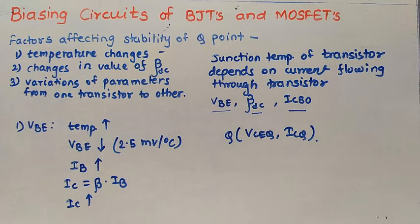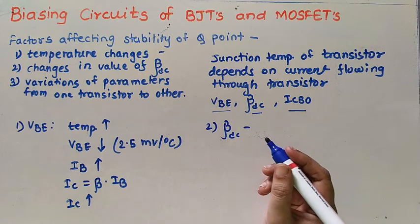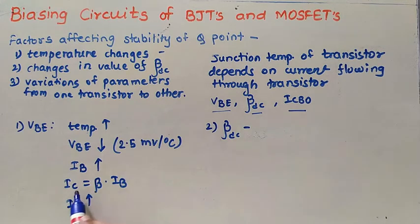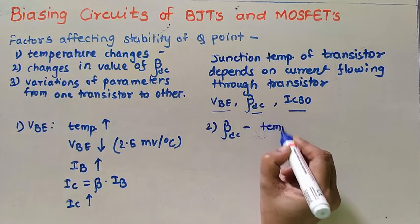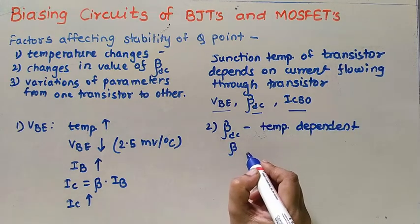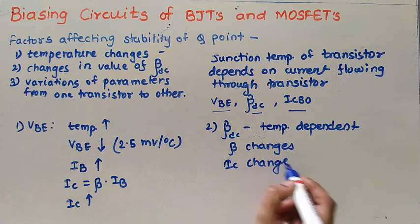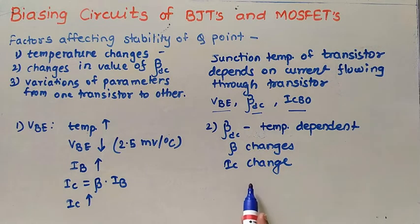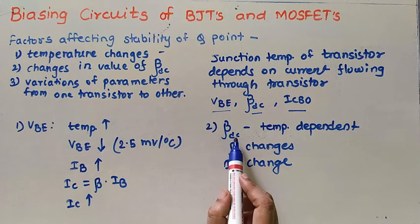Now we will see the beta value. This beta DC is also temperature dependent. We know that IC is equal to beta into IB. So if due to temperature the beta value changes, it is temperature dependent. If beta changes, due to change in beta, IC will also change. And it will also affect the position of Q point on DC load line. By this way, this change in beta DC will also affect the position of Q point.